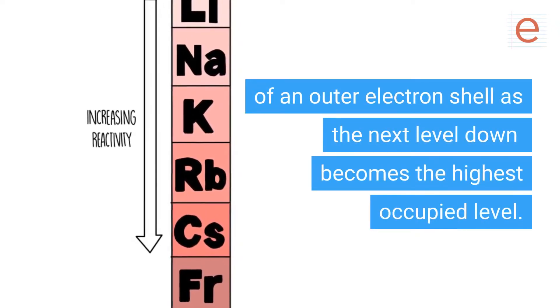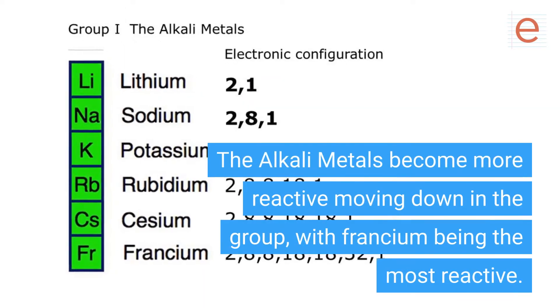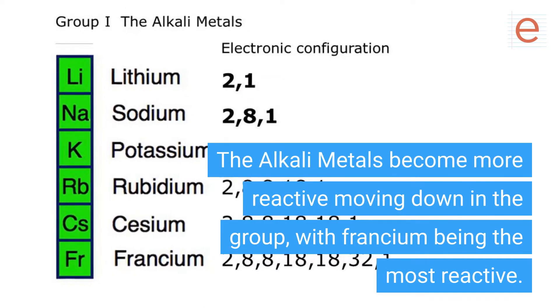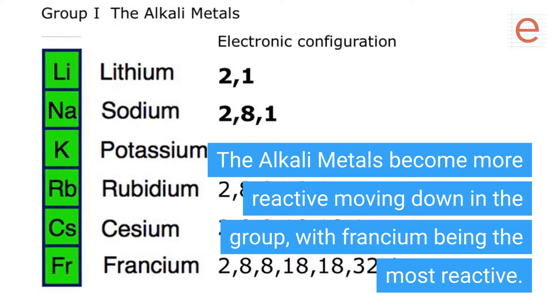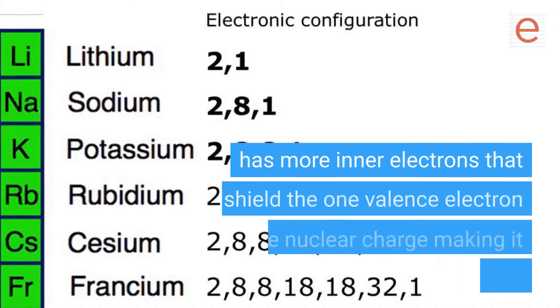The alkali metals become more reactive moving down in the group, with francium being the most reactive. This trend occurs because each element as you move down has more inner electrons that shield the one valence electron from the nuclear charge, making it less attracted.